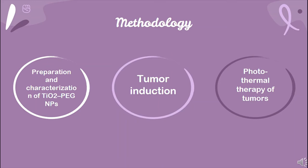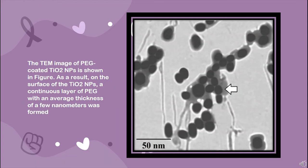Regarding photothermal therapy of tumors, two weeks after the melanoma tumors had sufficiently grown to approximately 1 cubic centimeter, treatment was started. Tumor sizes were estimated using the following equation: tumor volume = (L/2) × W², where L and W indicate the length and width of the tumor. The transmission electron microscope image of the polyethylene glycol-coated titanium dioxide nanoparticles is shown in the figure. A continuous layer of polyethylene glycol with an average thickness of a few nanometers was formed on the surface of the titanium dioxide nanoparticles.